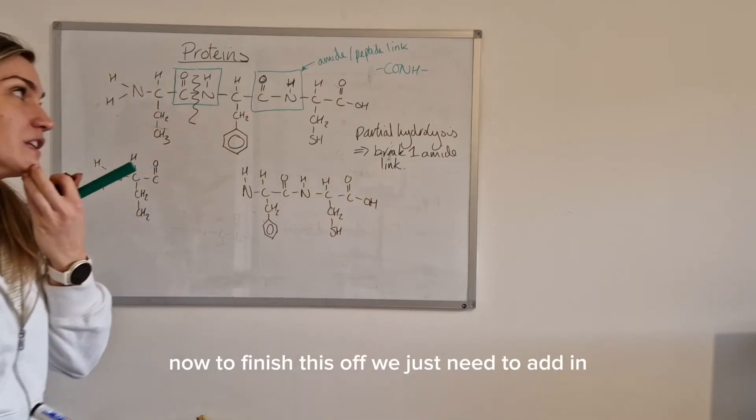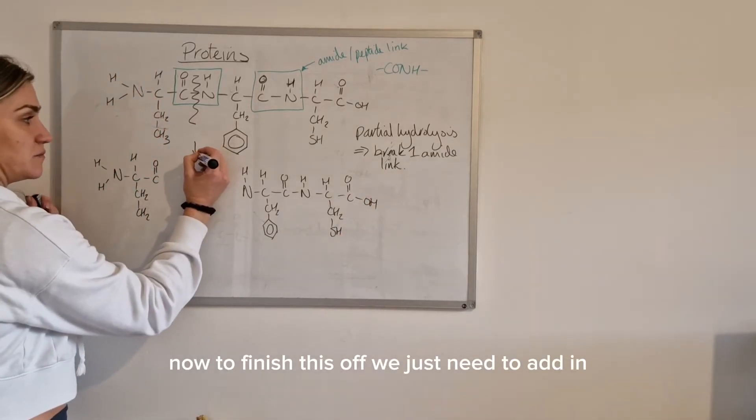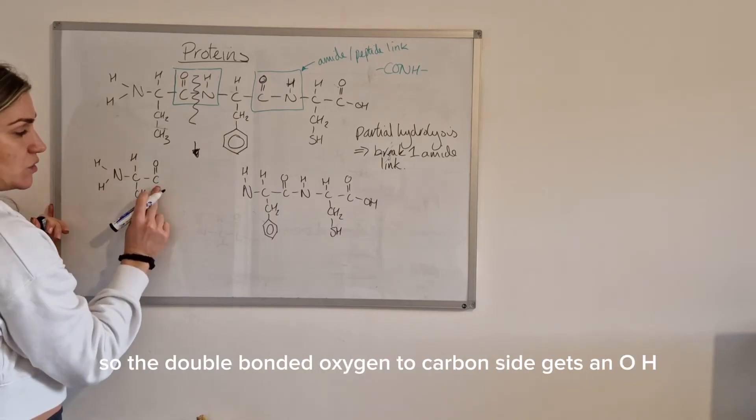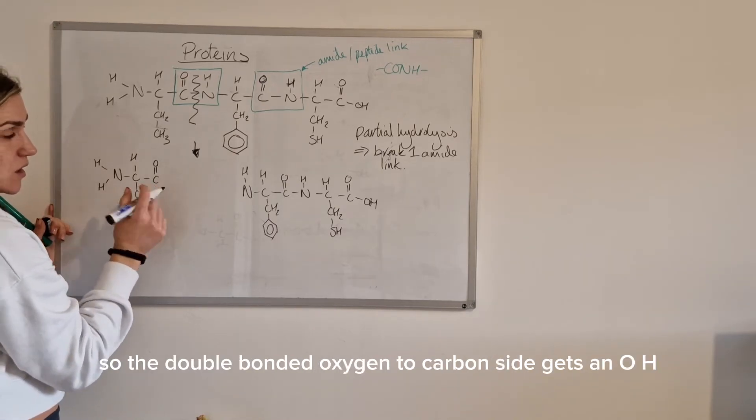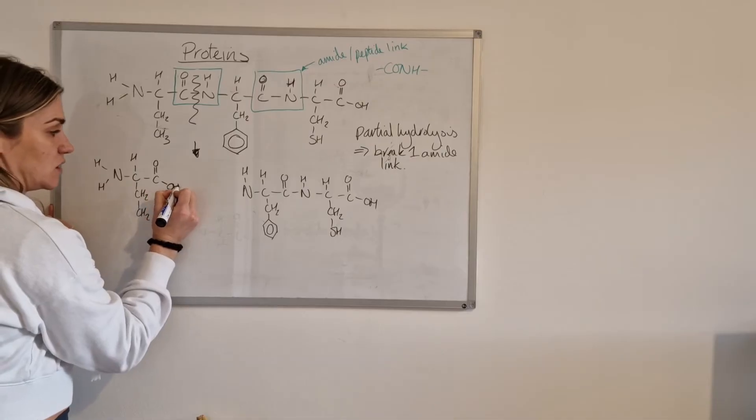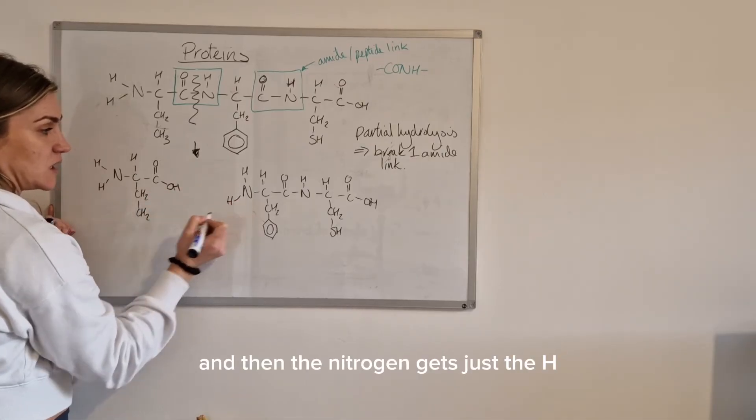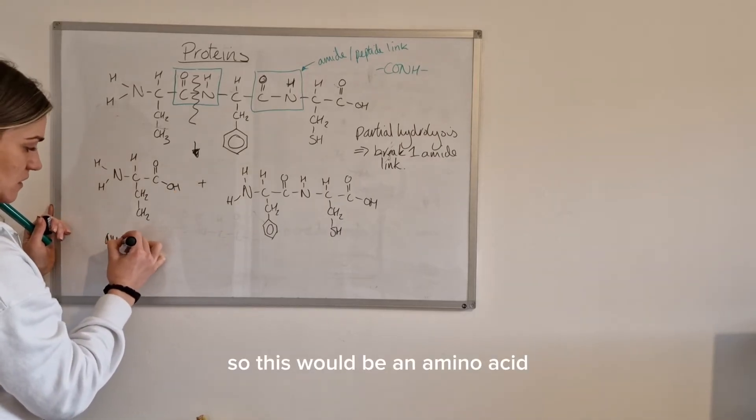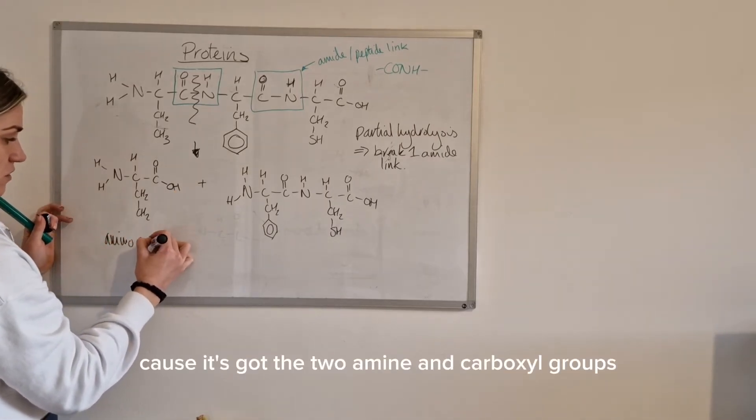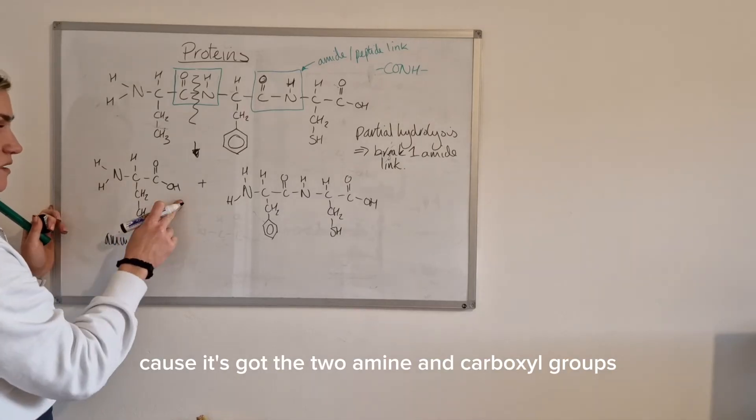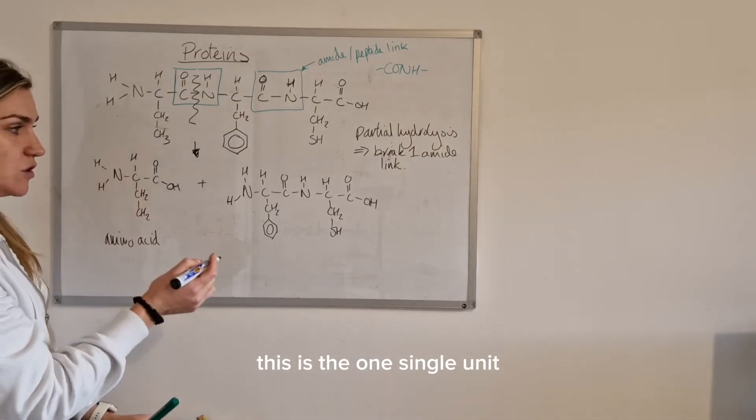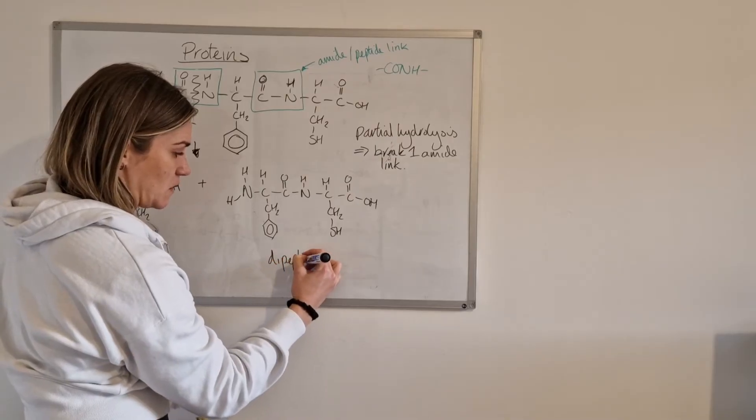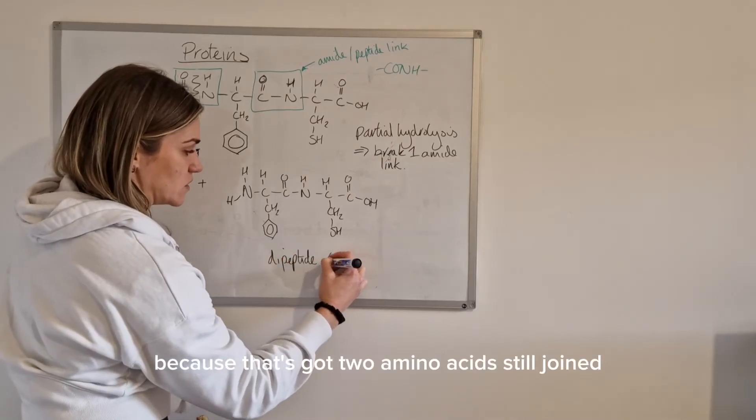Okay now to finish this off we just need to add in the water molecule that's been used to hydrolyze it. So the double bonded oxygen to carbon side gets an OH and then the nitrogen gets just the H. So this would be an amino acid because it's got the two full amine and carboxyl groups. This is the one single unit. This would be your dipeptide because that's got two amino acids still joined.